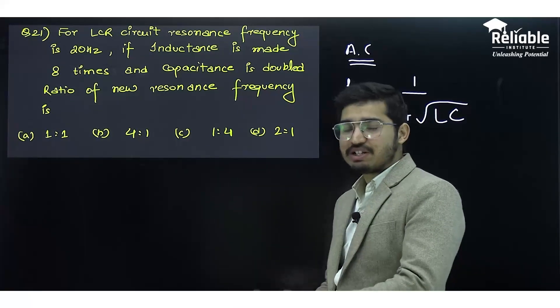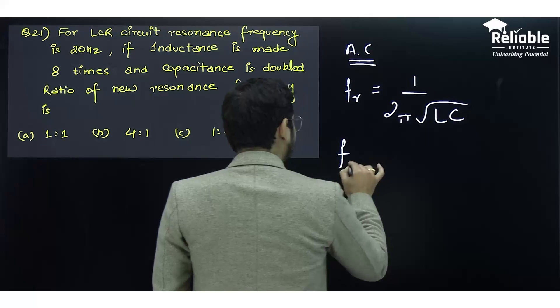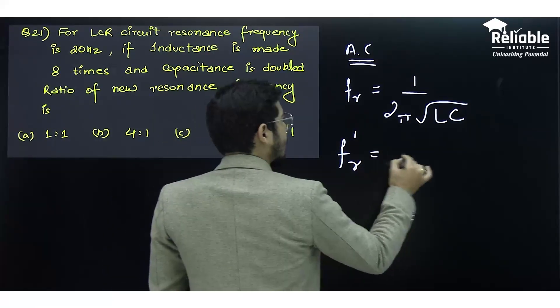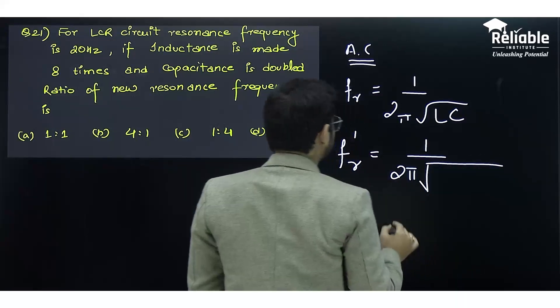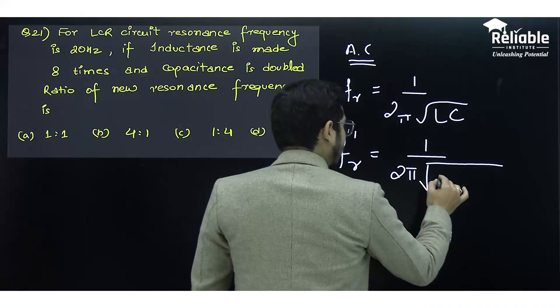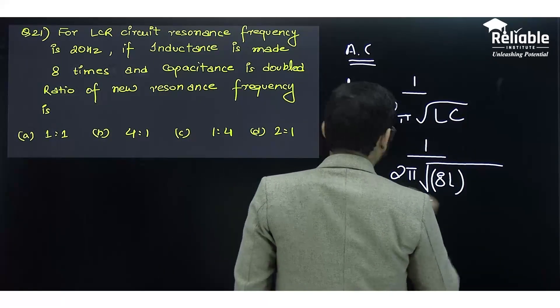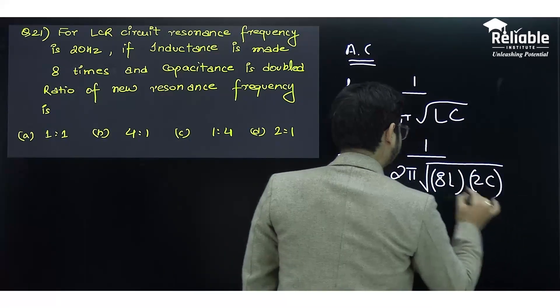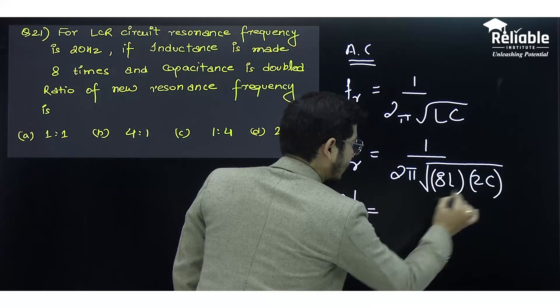They are asking us to calculate the ratio of the new frequency. The new frequency f_r' becomes 1/(2π√(8L × 2C)). Calculating f_r', we get 1/(2π√(16LC)).